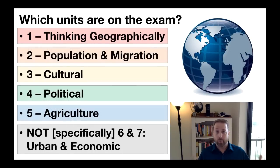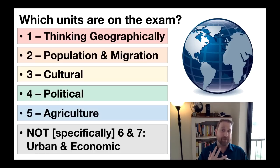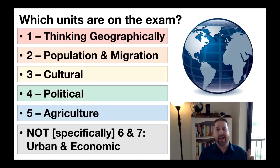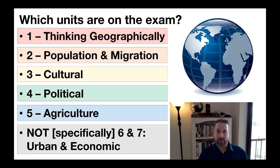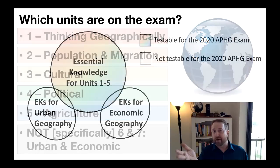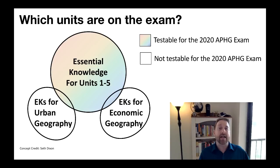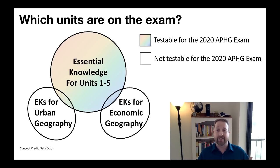Which units are on the exam? Units 1 through 5. The focus of the questions can be on thinking geographically, population and migration, cultural and political geography, as well as rural and agricultural geography. Units 6 and 7 — cities and urban geography and industrial and economic geography — will not be the focus of any FRQ specifically. But should you just forget about those? No. If you have learned that information, you can still apply your knowledge of those concepts if applicable.